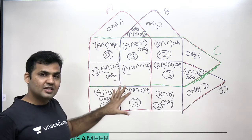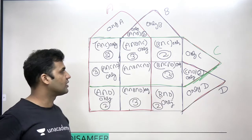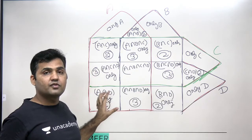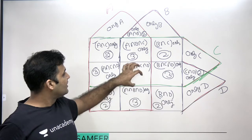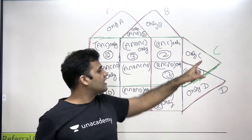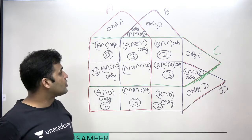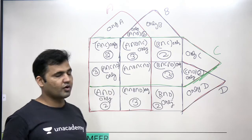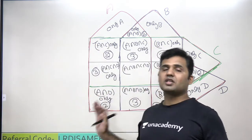So, to summarize: there are six cells that belong to the intersection of two sets, four cells that belong to the intersection of three sets, one cell that belongs to the intersection of all four sets, and four areas that belong to only a single set. Once you know this, we can start solving questions.